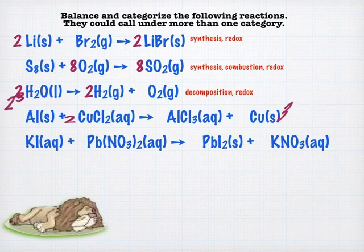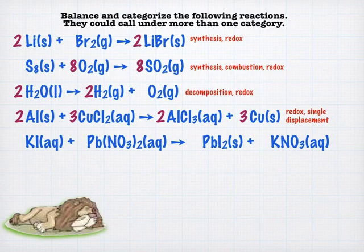We've got a single replacement next. Since we have elements moving into and out of compounds, that would also be a redox reaction. And then finally, we have a precipitation reaction down at the bottom. So that would be a double displacement reaction and also a precipitation reaction.